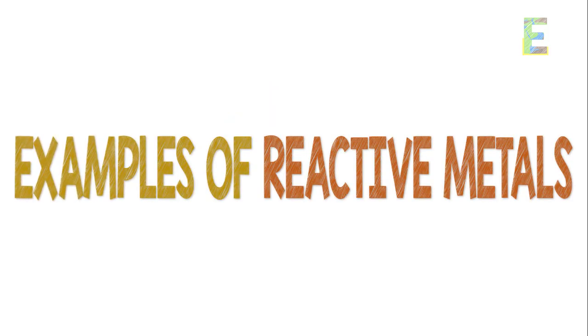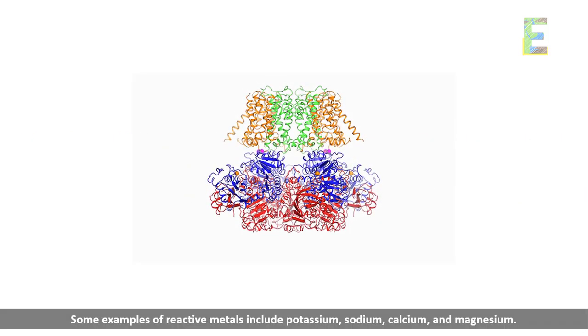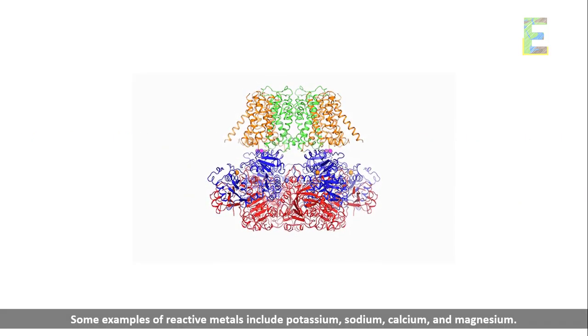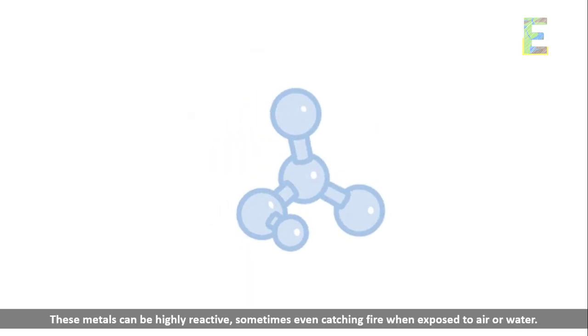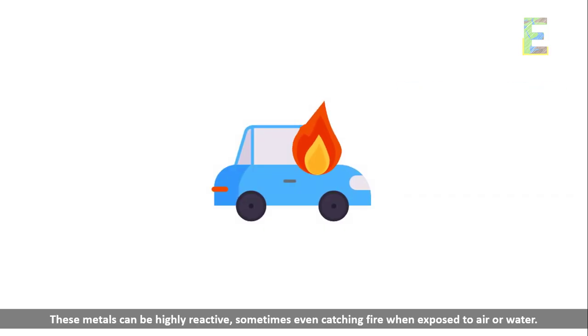Examples of reactive metals. Some examples of reactive metals include potassium, sodium, calcium, and magnesium. These metals can be highly reactive, sometimes even catching fire when exposed to air or water.